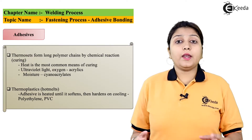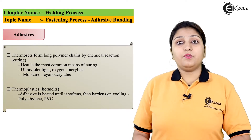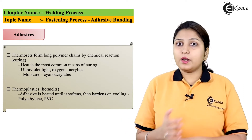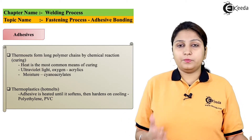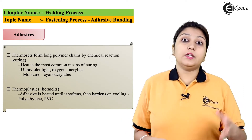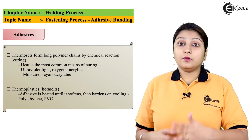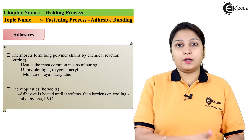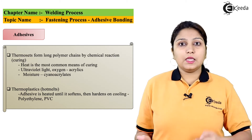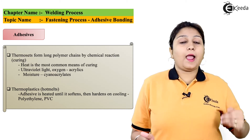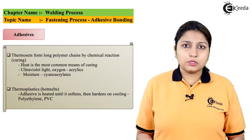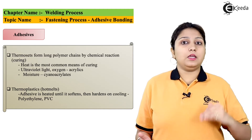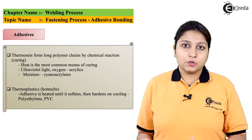So what are adhesives? If you see a glue, it is an adhesive. It is used to join paper, cardboard, or any other object — that is a kind of adhesive and a kind of joining process. Similarly, chemically active adhesives like epoxy or resin or any other suitable material can be used for joining purposes.